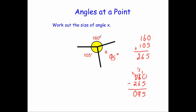So to find a missing angle, generally what we'll do is add up the angles that we're given and take it away from 360.